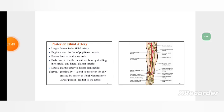Posterior tibial artery and its course and distributions. Larger than the anterior tibial artery, begins at distal border of popliteus muscle, passes deep to tendinous arch, and deep to flexor retinaculum by dividing into medial and lateral plantar arteries. Lateral plantar artery is larger than medial.